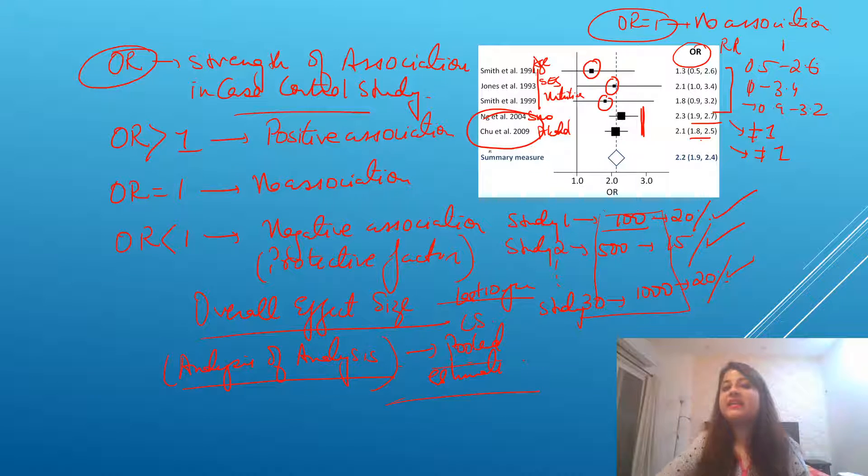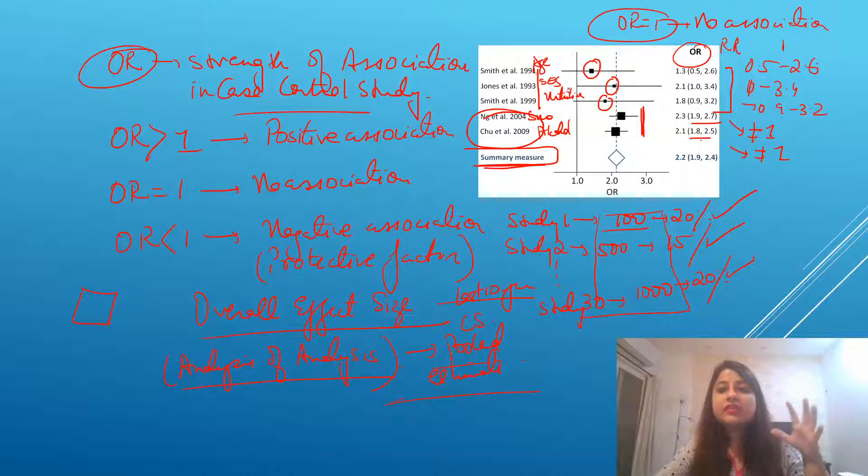That pooled estimate is represented by this summary measure or this diamond. Over here, when we are studying risk factors in breast cancer, just an example, we have included these five studies and the overall estimate. The overall, what is the association of these risk factors with breast cancer is given by this diamond.